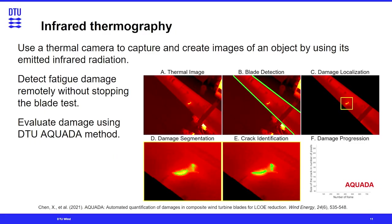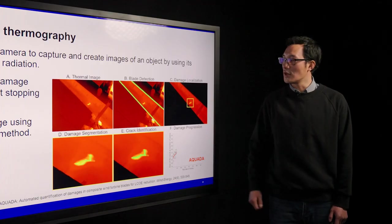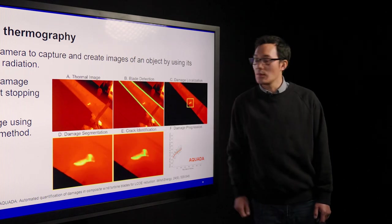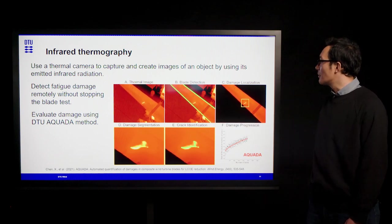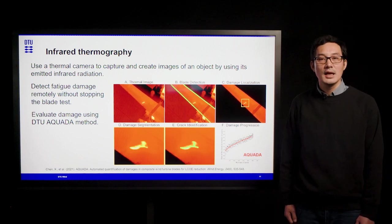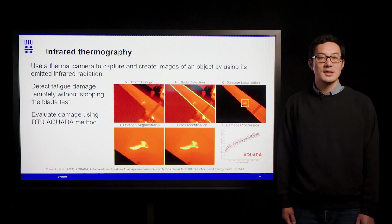Infrared thermography is a method that uses a thermal camera to capture and create images of an object by using its emitted infrared radiation, which is invisible to the human eye. This is a particularly useful method to detect fatigue damage remotely without stopping the blade test. At DTU Wind Energy, we have developed an Aquada method, which can not only detect the damage but also evaluate it in near real-time. Using a computer vision algorithm, we can isolate the blade from the irrelevant and noisy background, and by searching the damage automatically and evaluating it pixel by pixel, we can evaluate the damage progress in near real-time.